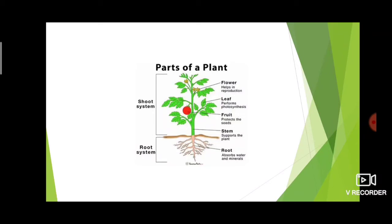Then stem — it supports the plant. These are the parts of plants. There are two systems: shoot system and root system. Shoot system contains flower, leaf, fruit, and stem. But root system contains only root.